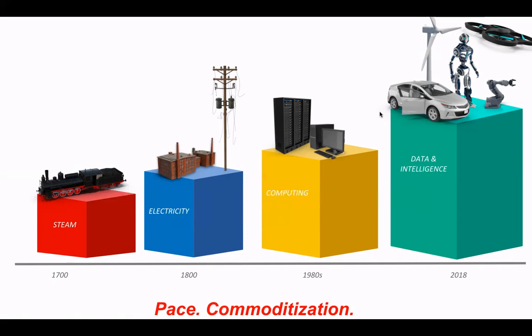The key insights from these revolutions are twofold. First, the pace has been quickening — the lag between revolutions has been shortening. Second, each revolution builds on and commoditizes the technologies of the previous one. For example, when the computing revolution happened, it no longer made sense to generate your own electricity — you consume it as a utility.